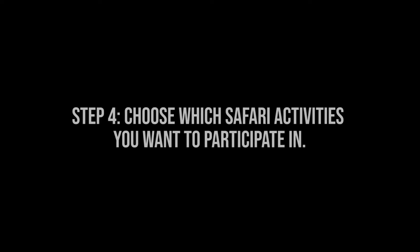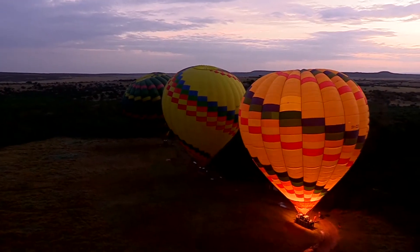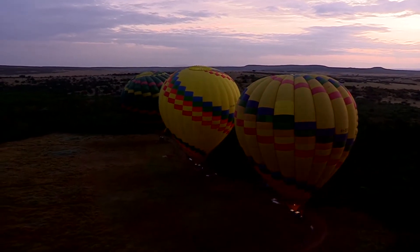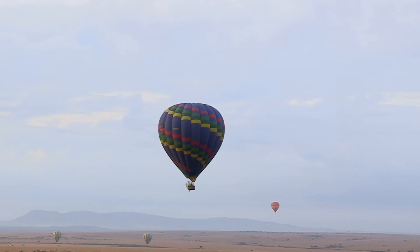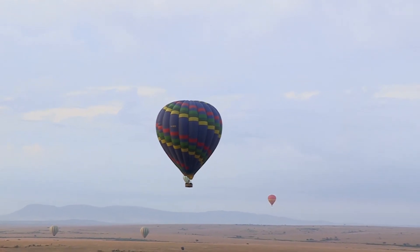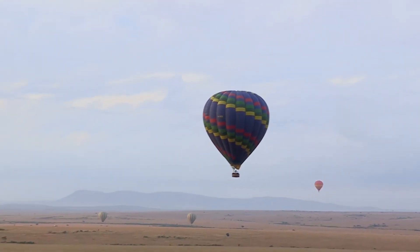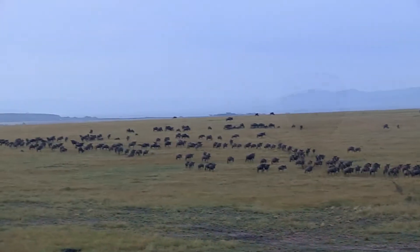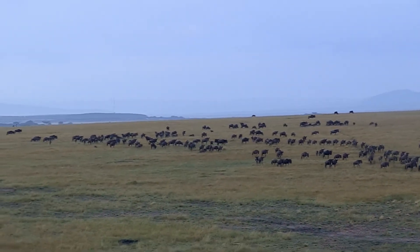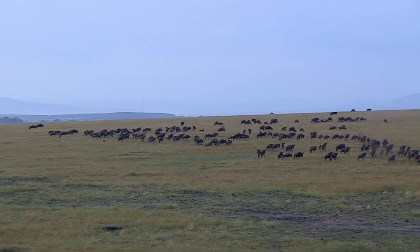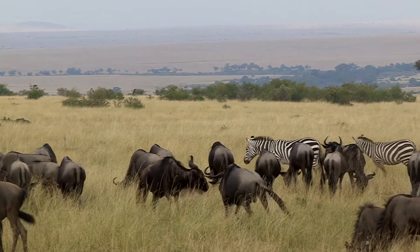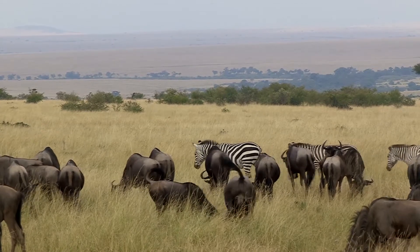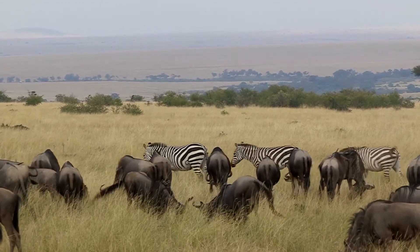Step 4: Choose which safari activities you want to participate in. If you're thinking about taking an African safari vacation, you'll want to make sure you experience all the activities you can while you're there. The first thing you'll want to do is list all the things you want to do while you're on your trip. Some of the most popular safari destinations in Africa are found in either South or East Africa, so think about what you want to do in those regions and narrow your list to just those activities.